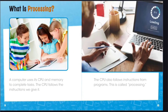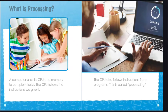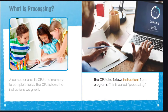What is processing? A computer uses its CPU and memory to complete tasks. The CPU follows the instructions we give it, and also follows instructions from programs. This is called processing.